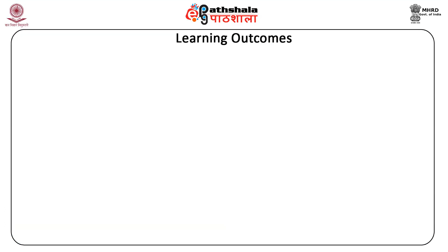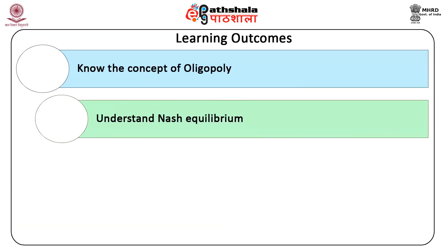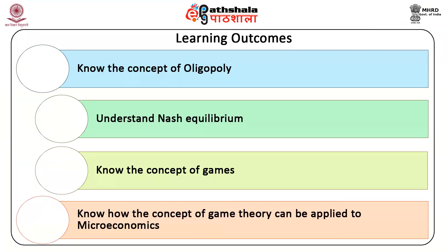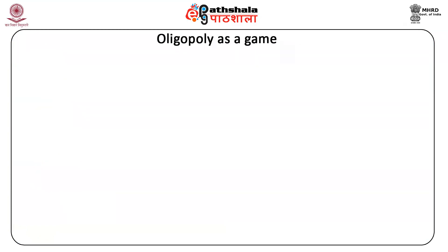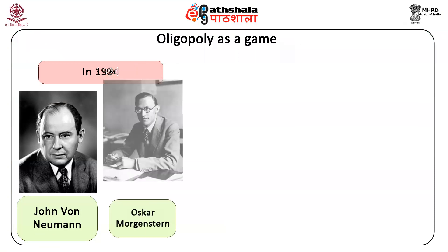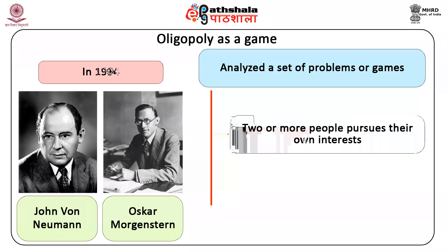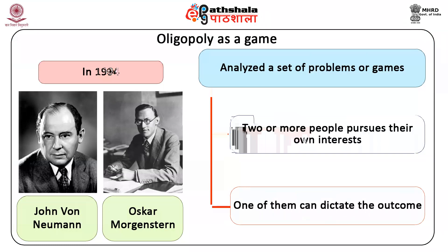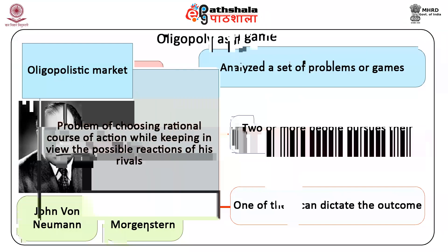In Nash equilibrium, each firm's best strategy is to maintain its present behavior given the present behavior of the other firms. The concept of Nash equilibrium is widely used in game theory. In 1994, mathematician John von Neumann and economist Oscar Morgenstern published a work in which they analyzed a set of problems or games in which two or more people pursue their own interests and in which no one of them can dictate the outcome.